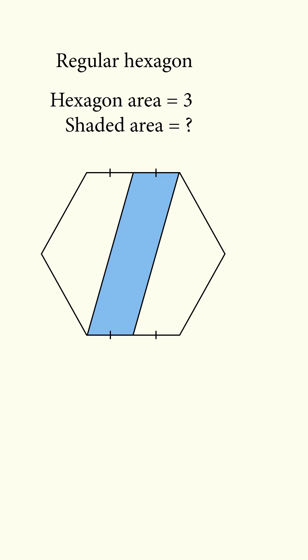Here's one way to solve the problem. Let s be half the side of the hexagon, and let h be the height of the hexagon. Then the area of the parallelogram is equal to h times s.